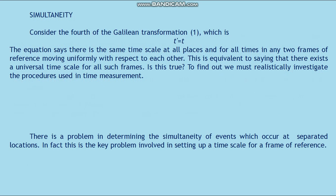Simultaneity. Consider the fourth of the Galilean transformation formulas (formula 1), which is t-asterisk equals t. This equation says there is the same time scale at all places and for all times of any two frames of reference moving uniformly with respect to each other. This is equivalent to saying that there exists a universal time scale for all such frames. Is this true? To find out we must realistically investigate the procedure used in time measurement. There is a problem in determining the simultaneity of events which occur at separated locations. In fact this is the key problem involved in setting up a time scale for frames of reference.